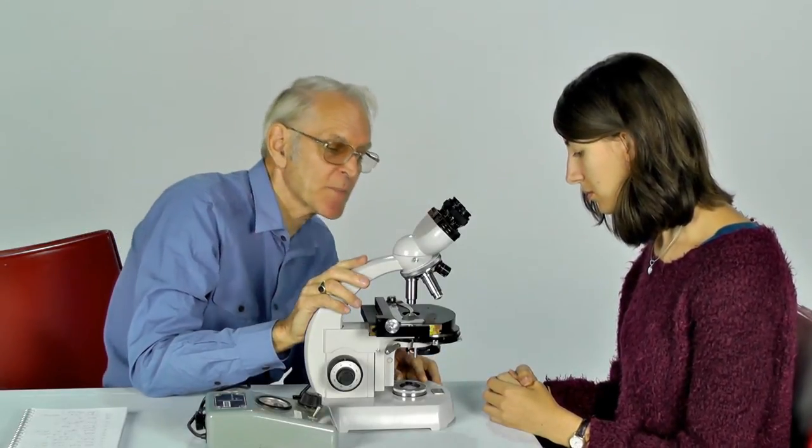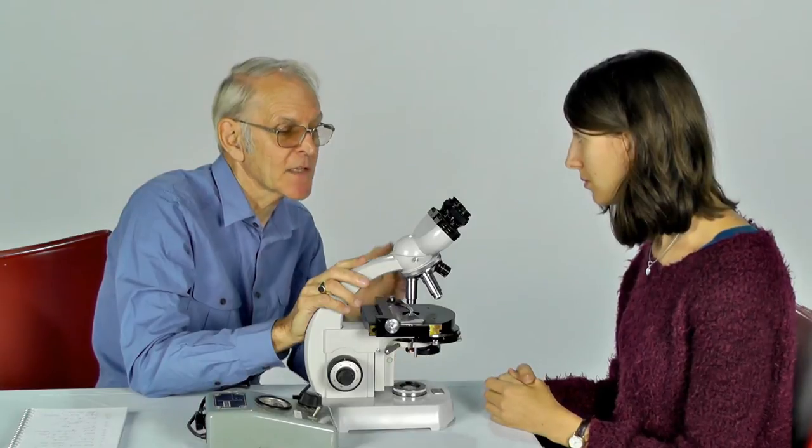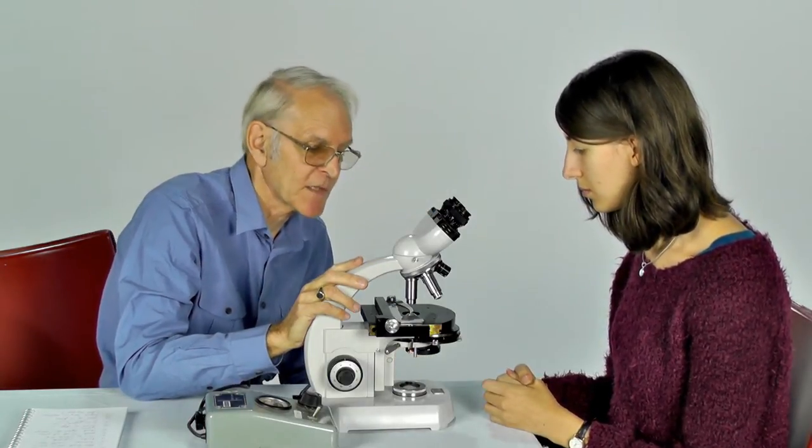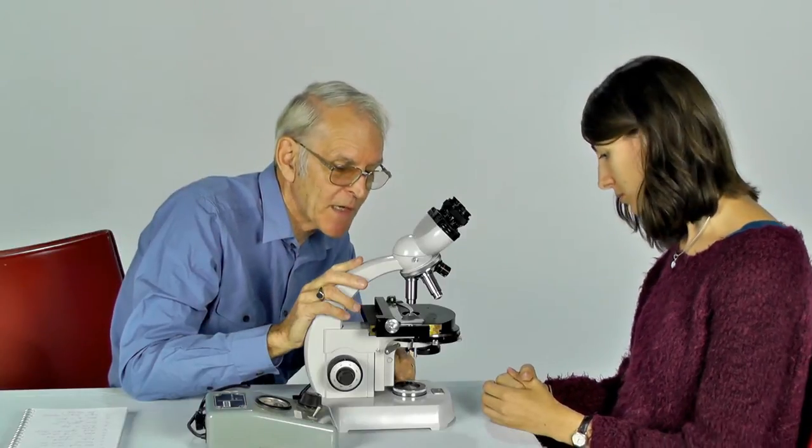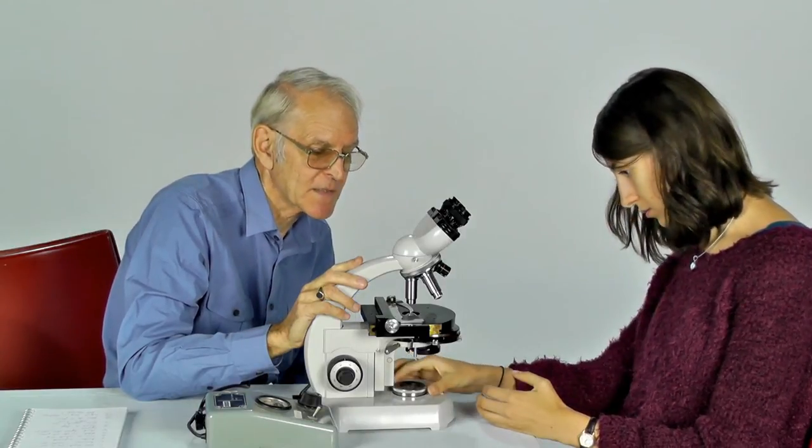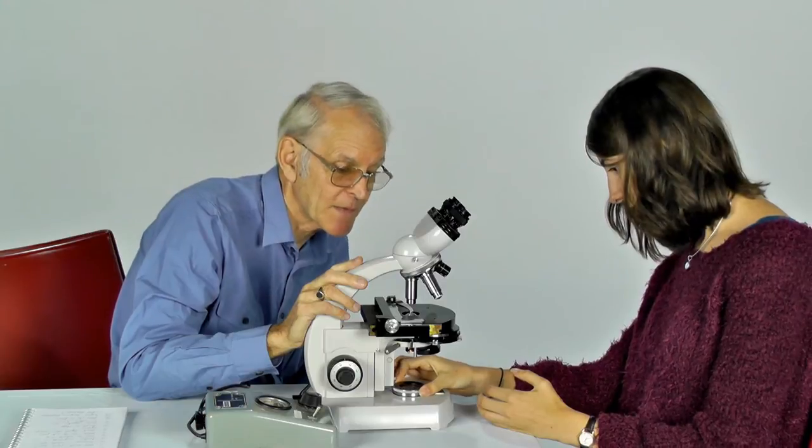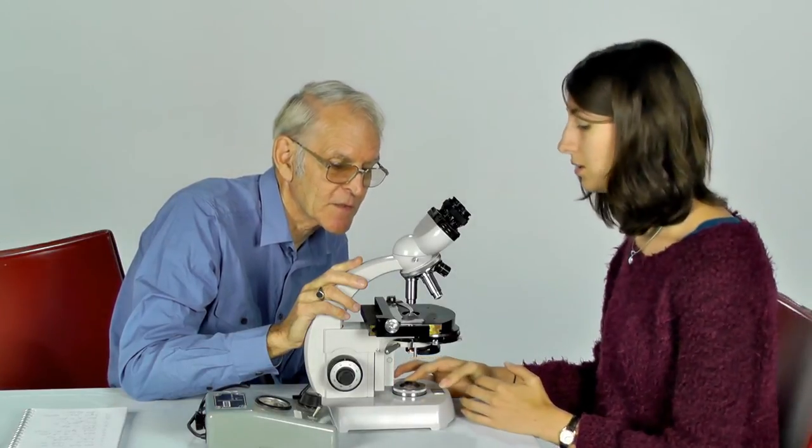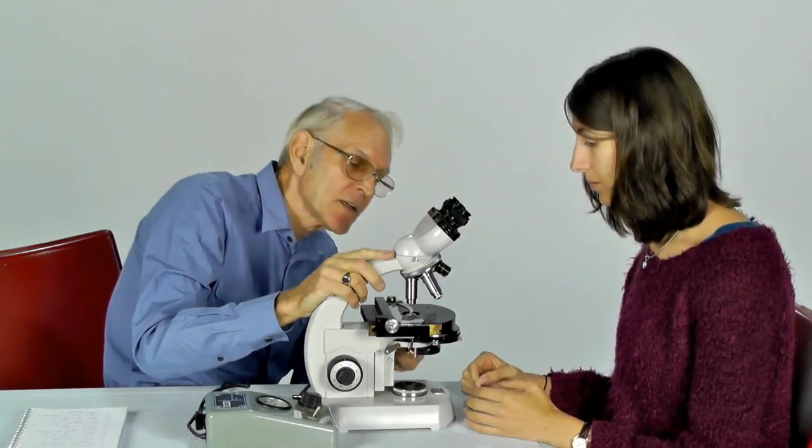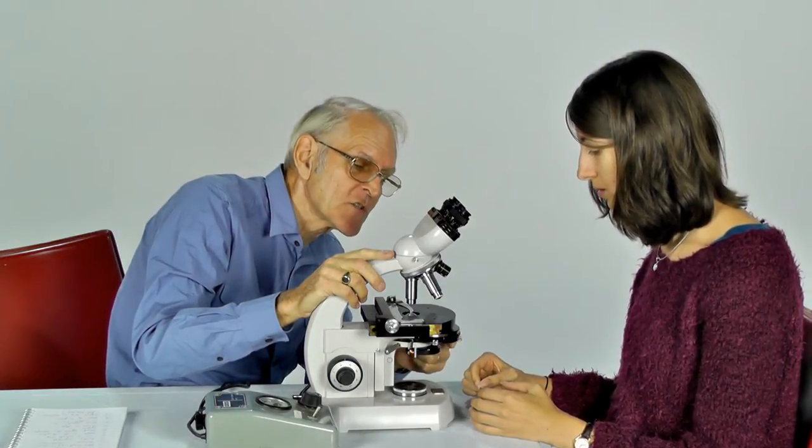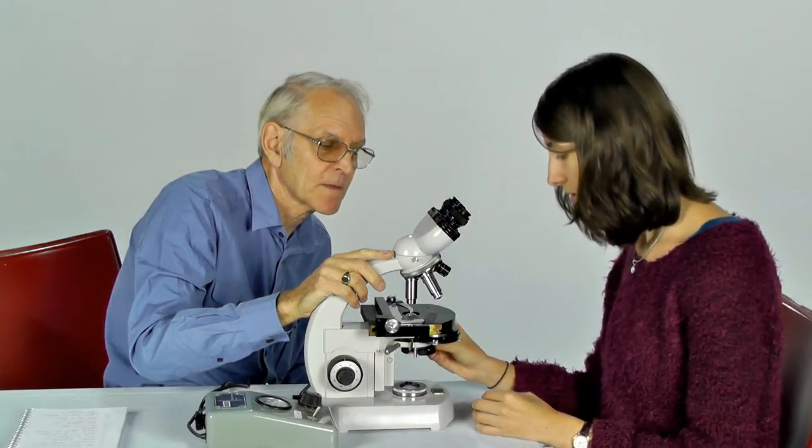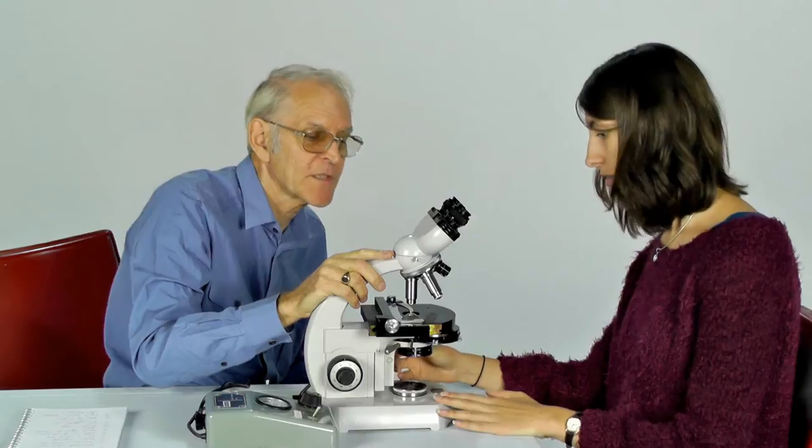Now the next step is to make sure that the light can travel unimpeded through the optical system of the microscope. So let's open up the diaphragm at the base, the field diaphragm, by turning that. That's opened. Good. Now we need to make sure that these filter trays are out of the way, clicked into position. Good.